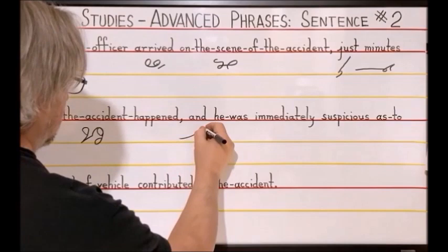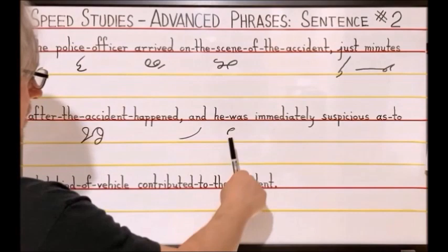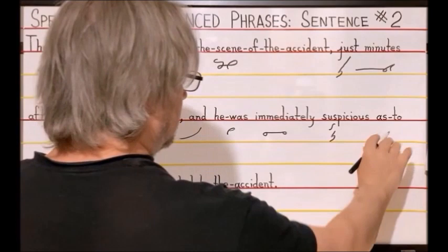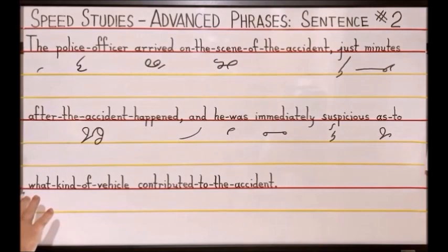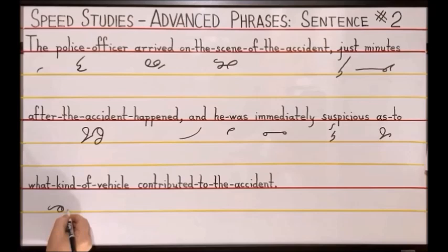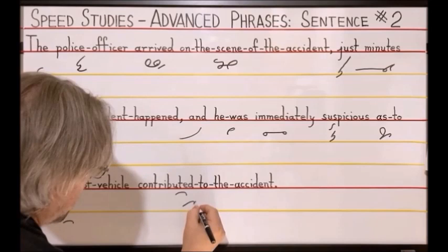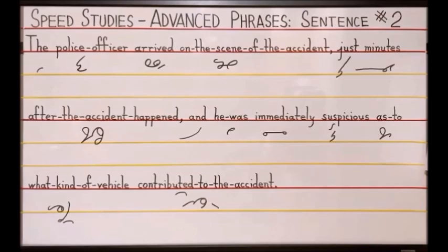And — in D-stroke — he was: the E-Left-S, immediately: E-M-E, suspicious: S-S-S-H-U-S, as to: A-S-T-U. What kind of vehicle is O-K-Long-I in a disjoint-V-E-disjoint-K, contributed to the accident: K above the line T-U-T-H-A-S, period.